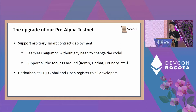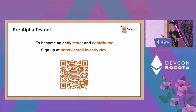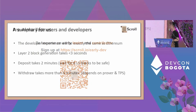Yesterday at the ZK community session, we let the community deploy smart contracts on us. We have opened registration to all developers. If you want to become an early tester or contributor, sign up at scroll.io/early-dev. You can experience how easy it is to deploy things on us.